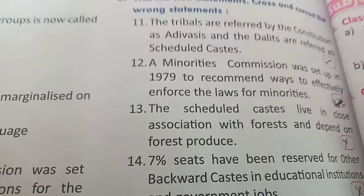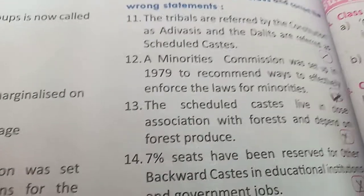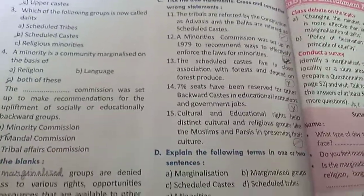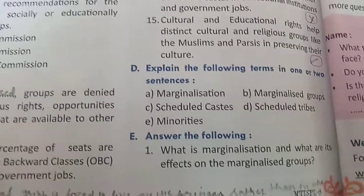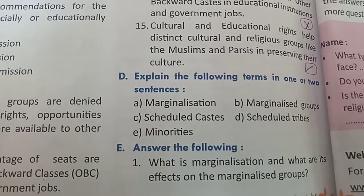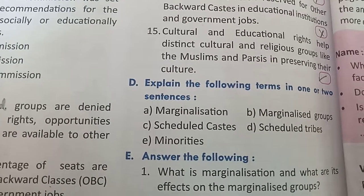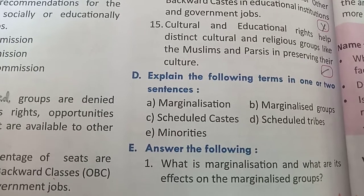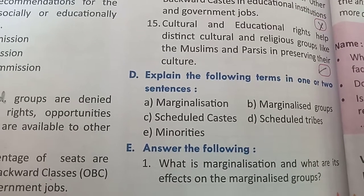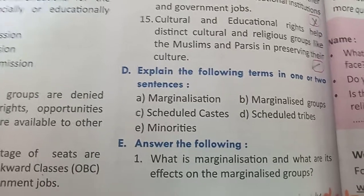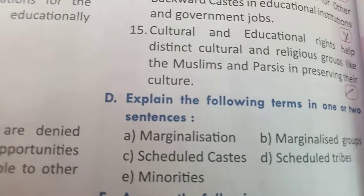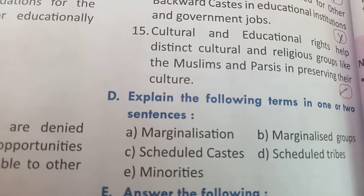True or false statements are also given. You have to do those yourself — first read the chapter attentively, then you can solve them easily. The D part asks you to explain the following terms in one or two sentences: marginalization, marginalized groups, Scheduled Castes, Scheduled Tribes, and minorities. Write all these terms in your fair notebook carefully.